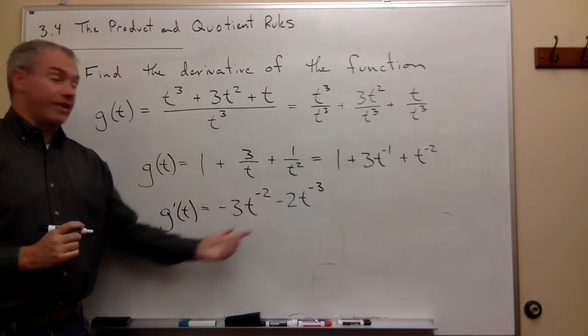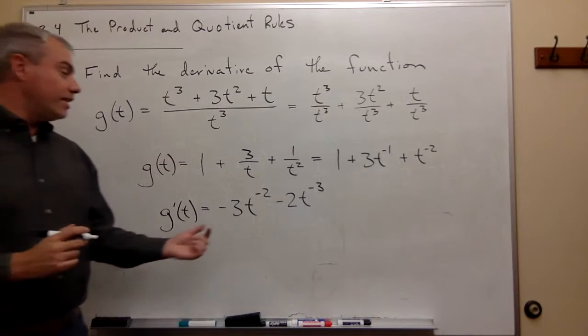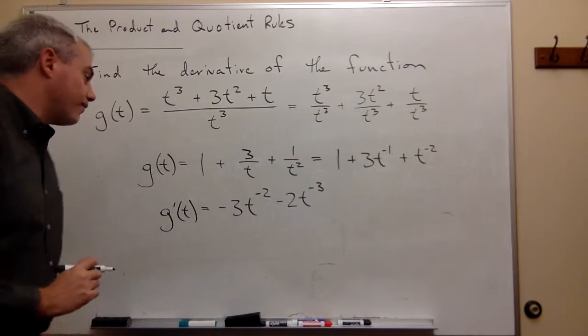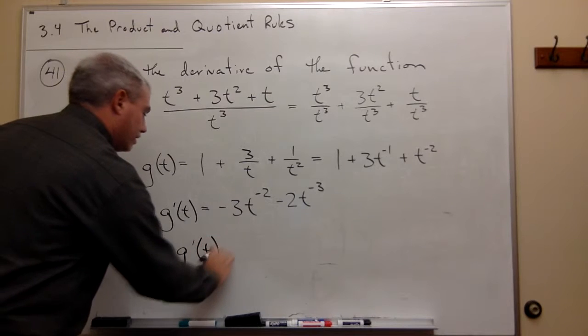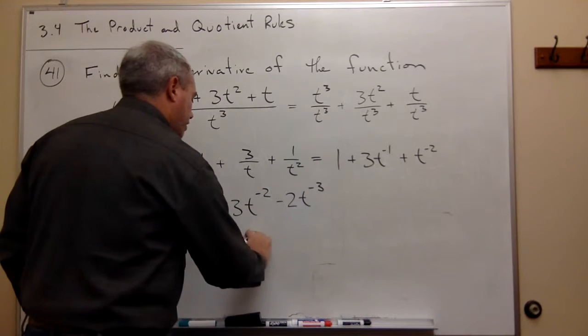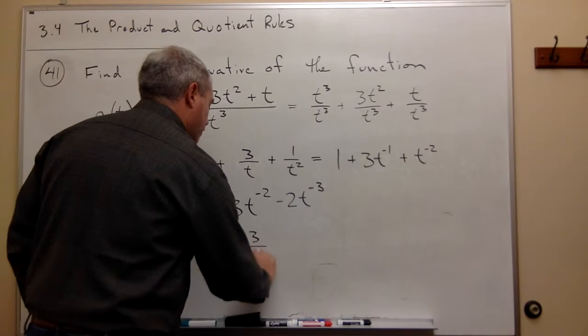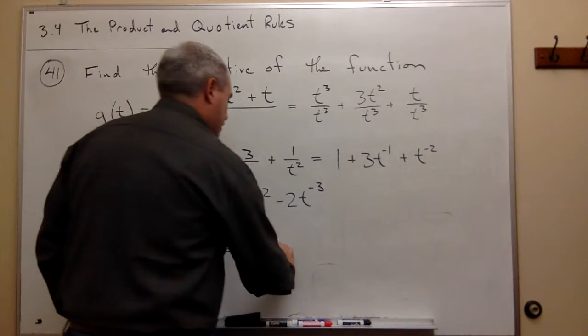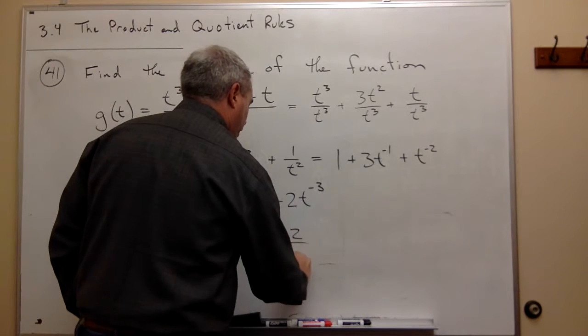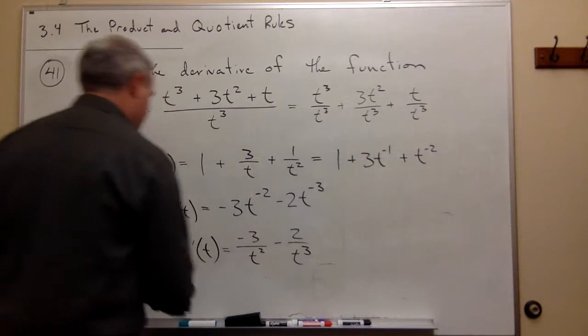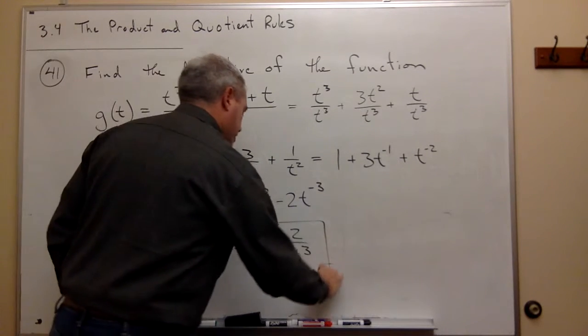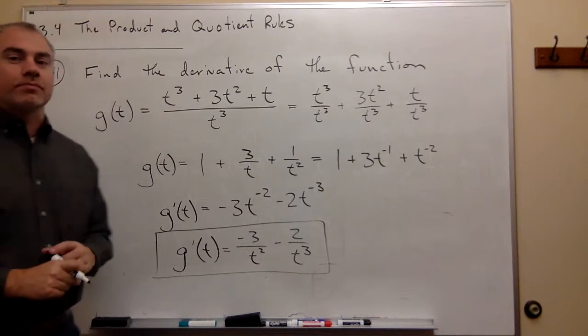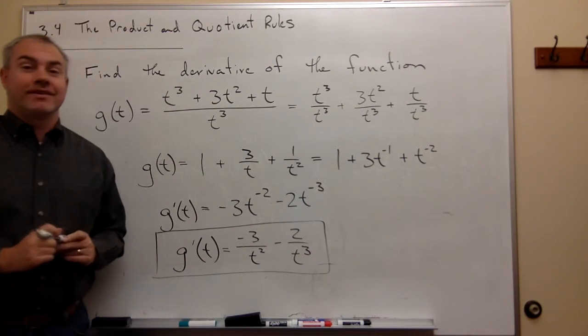And so here's my derivative. If you don't really like negative exponents, that's fine. We can rewrite it. We can say that g prime of t is equal to negative 3 divided by t squared minus 2 over t cubed. And both of these are correct, but I'll just box in this one because it's the pretty answer.